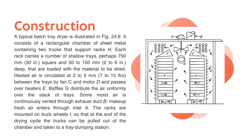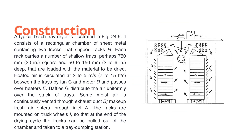The hot air takes away moisture and continuously vents through the duct (letter B) provided at the top. Fresh air makeup is done through the inlet (letter A). The racks are mounted on truck wheels so that after the drying cycle is completed they can be easily removed from the chamber and taken to the tray dumping station.